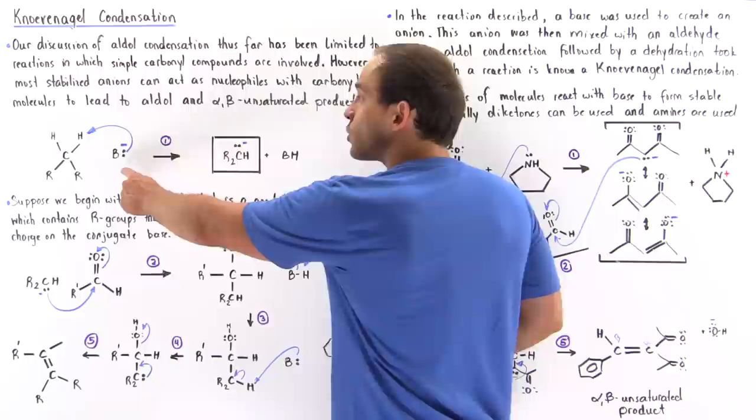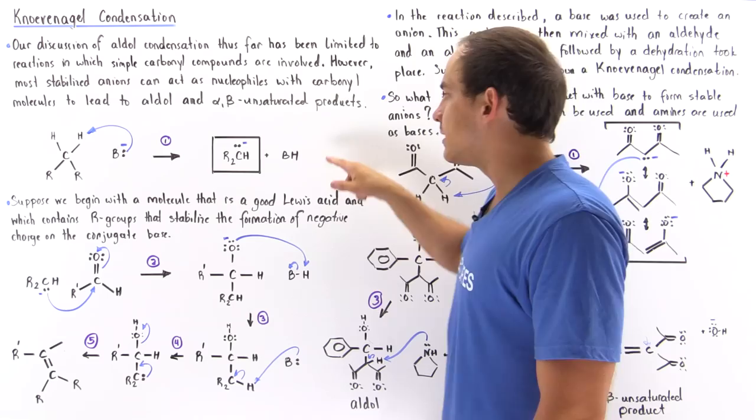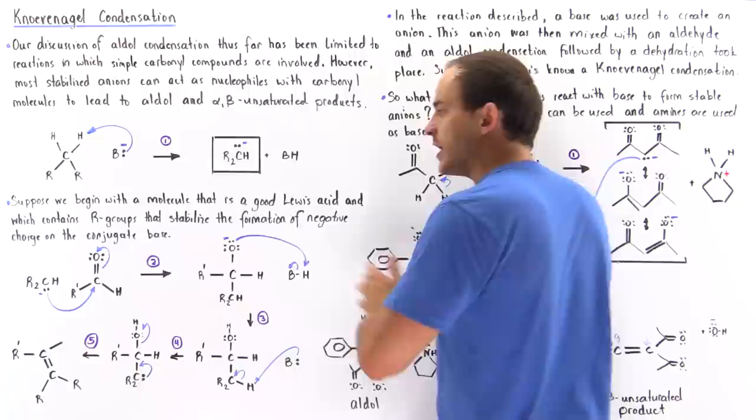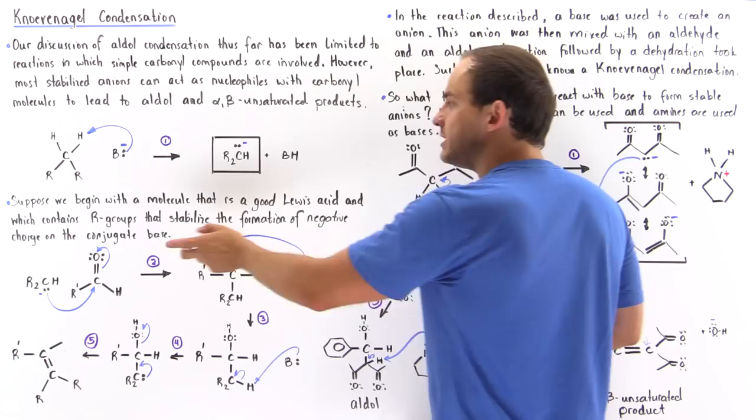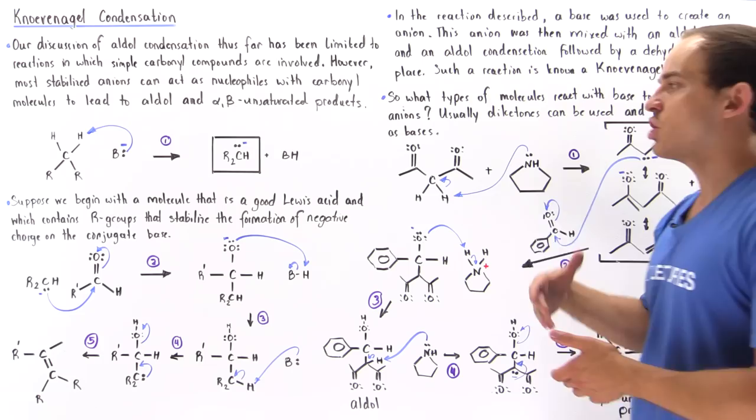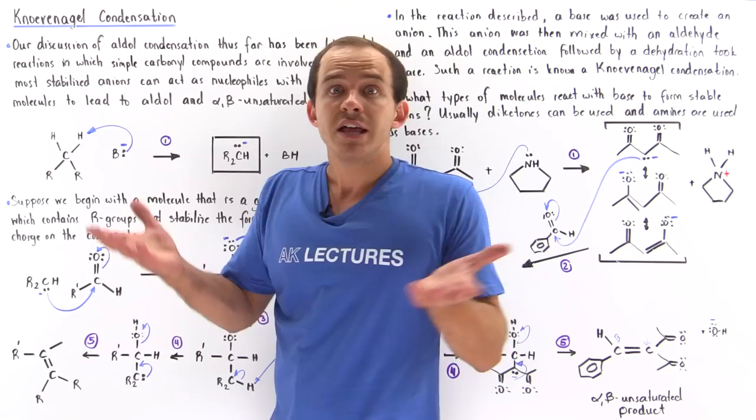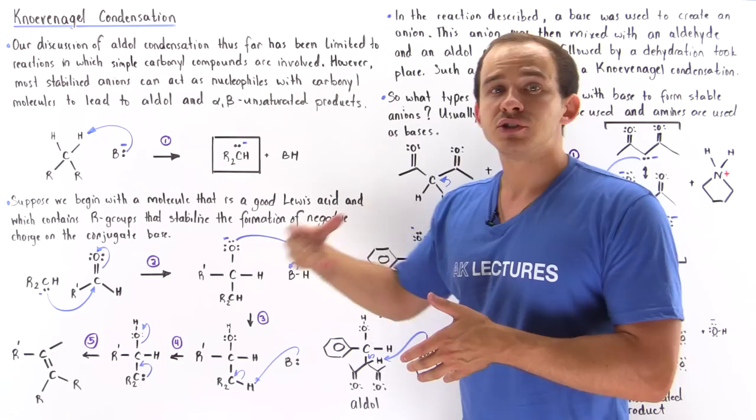The base grabs one of the H's from the alpha carbon, forming the following anion as well as the conjugate acid to this particular base. So once again, suppose that we begin with a molecule that is a good Lewis acid and which contains the R groups that stabilize the formation of the negative charge on the carbon. So in step one of the covenangle condensation, we form the nucleophile — the anion that will act as the nucleophile in our carbonyl reaction — to form our aldol product as well as the alpha-beta unsaturated product.